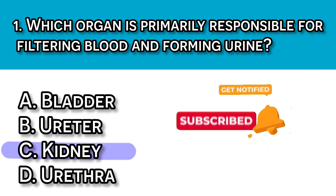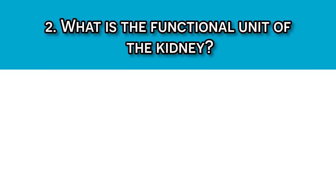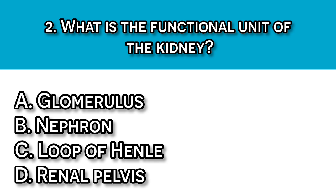Question number two: What is the functional unit of the kidney? A. The glomerulus, B. The nephron, C. The loop of Henle, and D. The renal pelvis. The answer here should be B, the nephron. The nephron is the microscopic unit where filtration, reabsorption, and secretion occur to form urine.